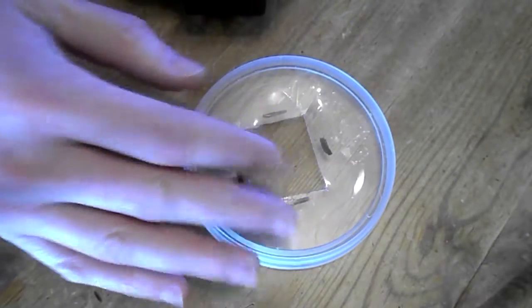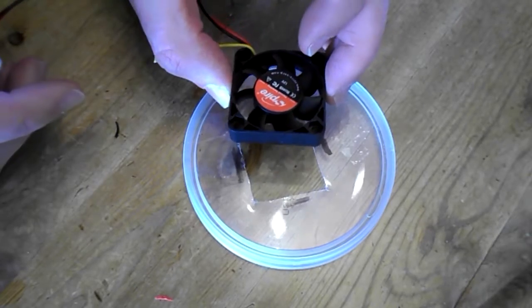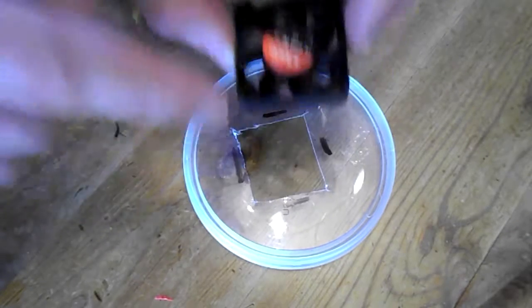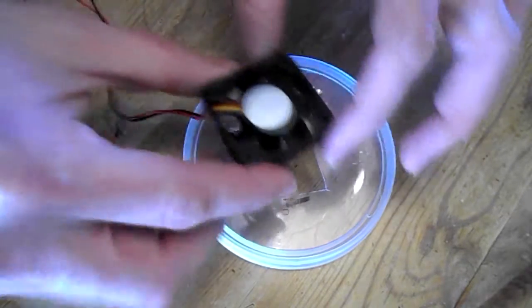This is the top side of the lid. We've got to glue on the fan, so we need to know which way the air is flowing. Obviously it flows this way, so we need to set it like this.